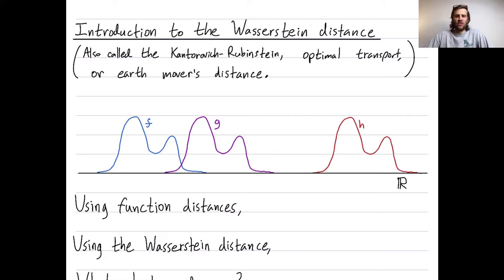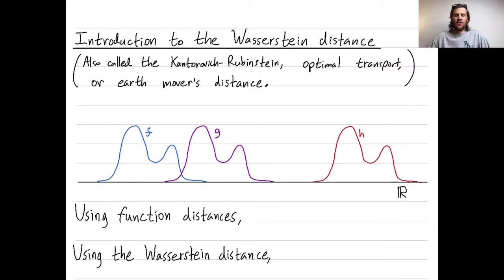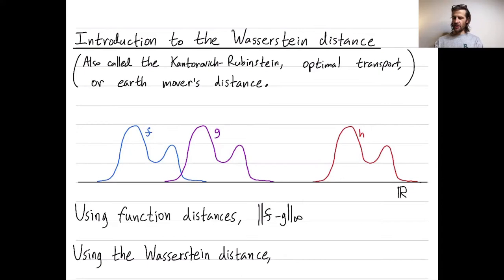Let me give you an intuitive introduction to begin. So pretend that I have three functions, f, g, and h. These are real-valued functions defined on the real line. One type of function distance might be the sup-norm distance. So I could consider the sup-norm distance between f and g. To figure out the sup-norm distance, you find the position in the domain where the values of f and g differ by as much as possible, and you see how much they differ by there at that spot.